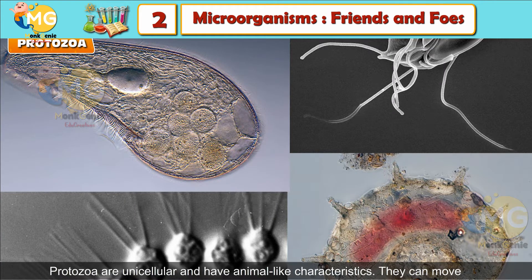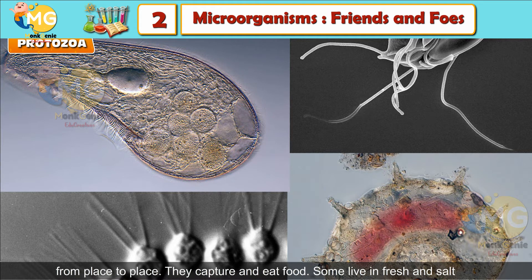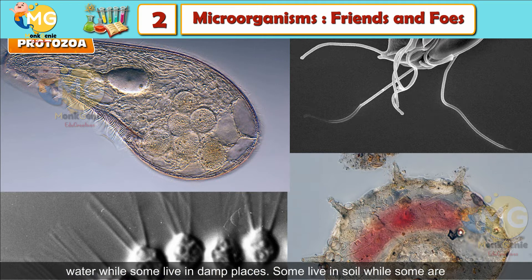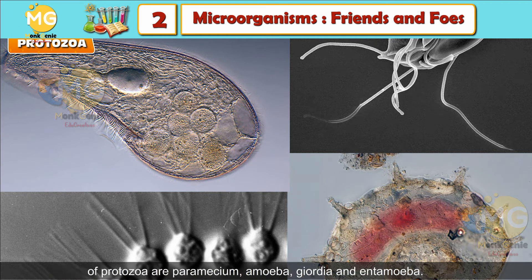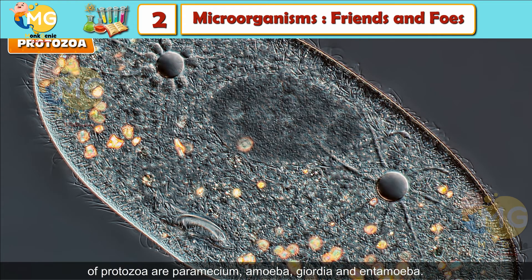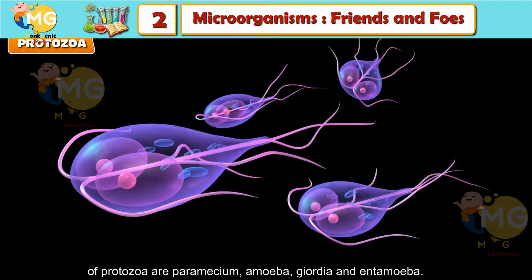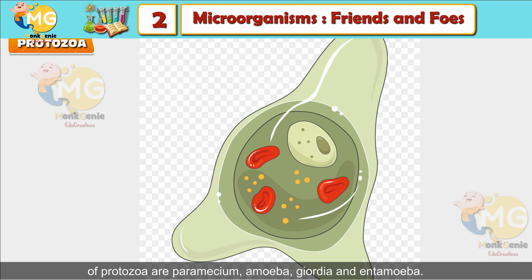Protozoa are unicellular and have animal-like characteristics. They can move from place to place and they capture and eat food. Some live in fresh and salt water, while some live in damp places. Some live in soil, while some are parasitic, living in the bodies of animals including humans. Some examples of Protozoa are Paramecium, Amoeba, Giardia and Entamoeba.